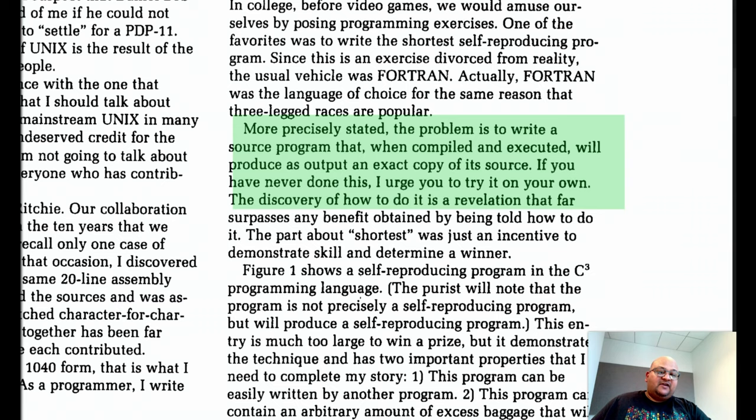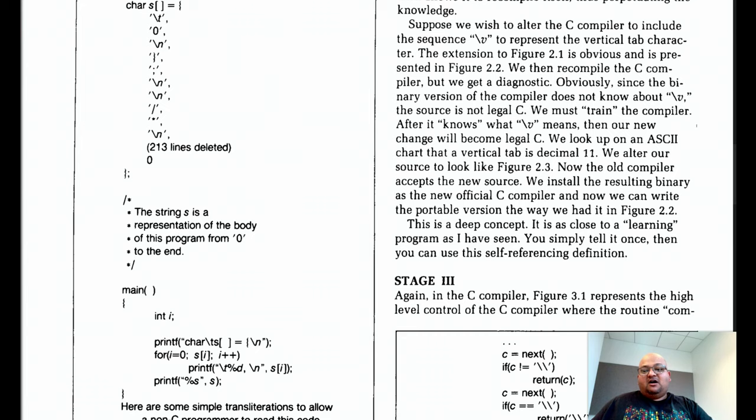And just to make things concrete, Thompson gives an example of a quine written in the C programming language. So what's going on in this program? He defines a character array, which is actually a string representing this very program. And then in main, he iterates over that character array and prints it out. Well, to be precise, he prints a few things before and after and also prints this long character array. And when you run this, you will get back the same program.